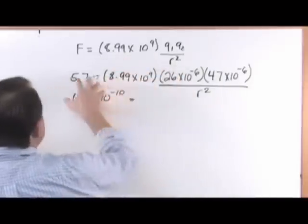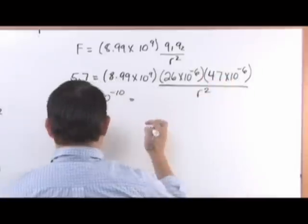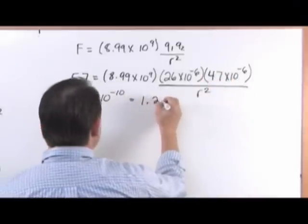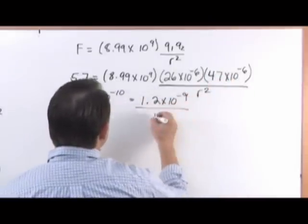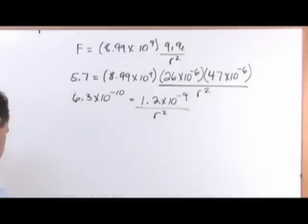On the right, I'm just going to multiply these two numbers together, 1.2 times 10 to the minus 9 over R squared.